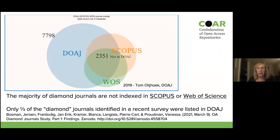Even UNESCO, which supports open science and talks about bibliodiversity, is making the same mistake — their UNESCO Science Report 2021 uses Scopus data to compare countries' research outputs. This means publishing in any journal outside Scopus, or sharing research outputs that are not journal articles, renders them essentially invisible in research assessment systems, creating a huge disincentive to use anything beyond major international journals. It's worth noting that around 65% of scholarly journals indexed in the Directory of Open Access Journals are not in Scopus, and only one third of diamond open access journals are even in DOAJ — so there's a whole ecosystem of journals essentially invisible to research assessment.